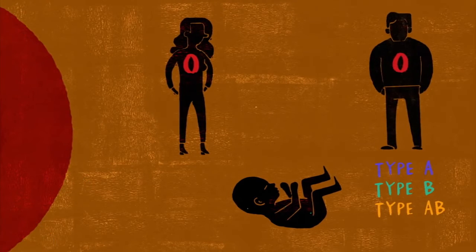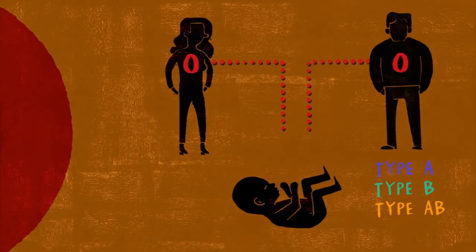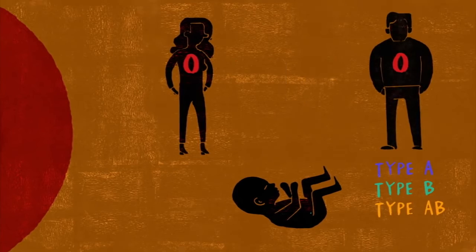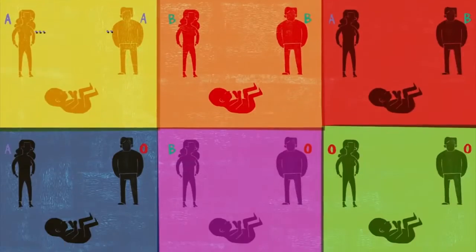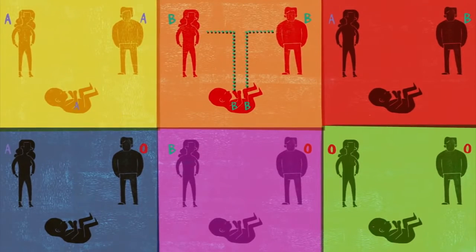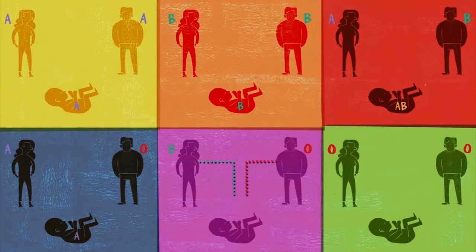But if you happen to inherit two O's, instructions will be expressed that make blood cells without the A or the B antigen. Because of these interactions, knowing both parents' blood types lets us predict the relative probability of their children's blood types.